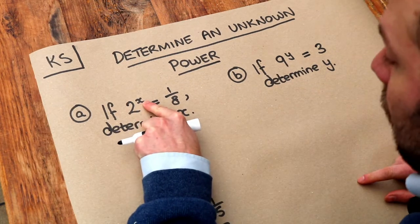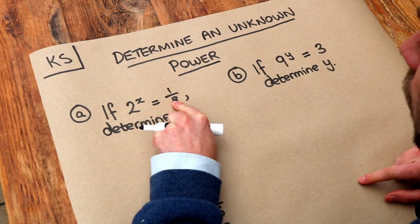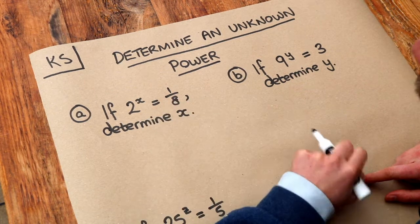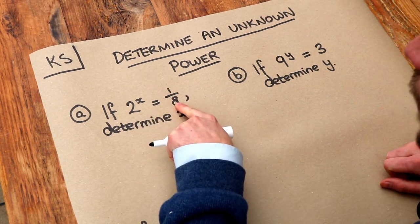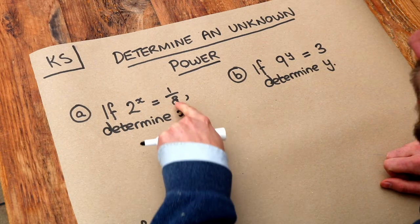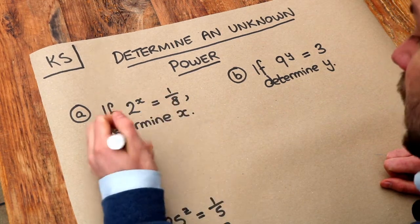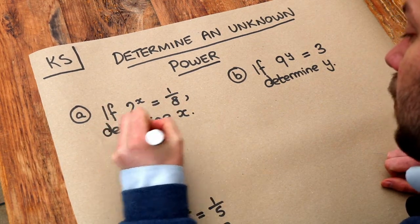If 2 to the power of something is equal to an eighth, what power of 2 would give you that eighth? Now we know that if we have 1 over something after we've done a power of something, that's because that power was negative. So we know that x is going to be negative.